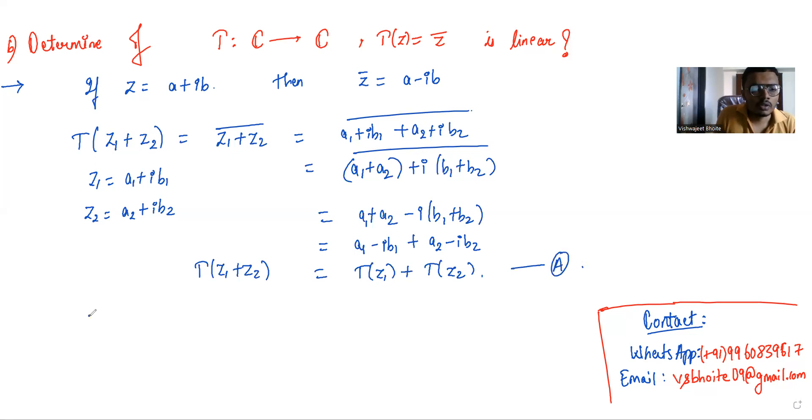T of kz1 is nothing but T of k times a1 plus i times kb2. This equals ka1 minus i times kb2, which is k times a1 minus ib2, which is the same as k times z1 bar, which is k times T of z1.